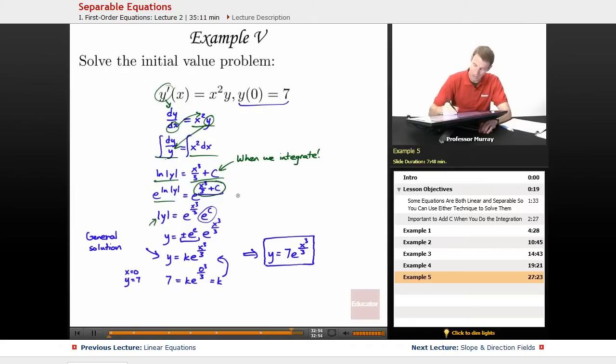Now you can't write that as e to the x cubed over 3 plus c. That's not the same thing, so that would be very bad. It's also not equal to e to the x cubed over 3 plus e to the c. That's also bad. It's really, we're using the laws of exponents here. x to the a plus b is equal to x to the a times x to the b. So this is e to the x cubed over 3 times e to the c.